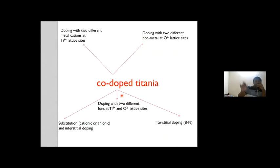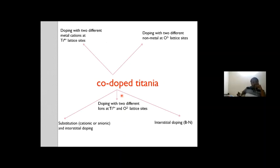For co-doped titania, you can substitute two different metal cations at Ti4+ sites — called co-doped — or two different non-metal ions at oxygen lattice sites. Or one can be substitutional and the other interstitial, or both can be interstitial, just as observed with boron-nitrogen co-doped states. These are the four different states of co-doped titania.